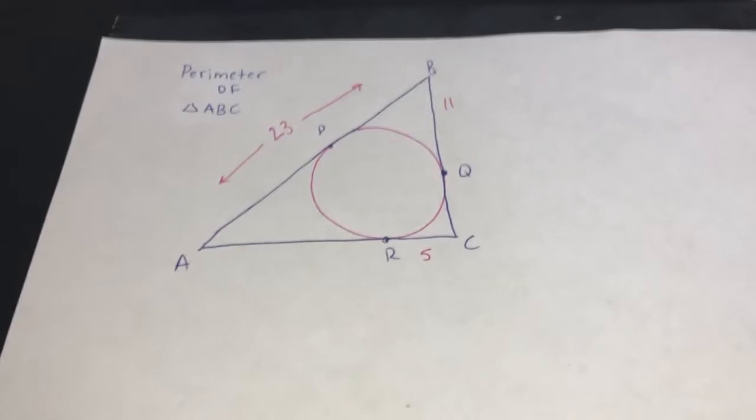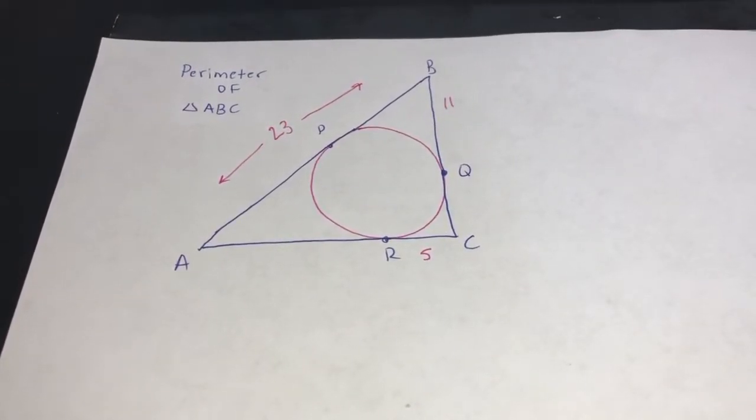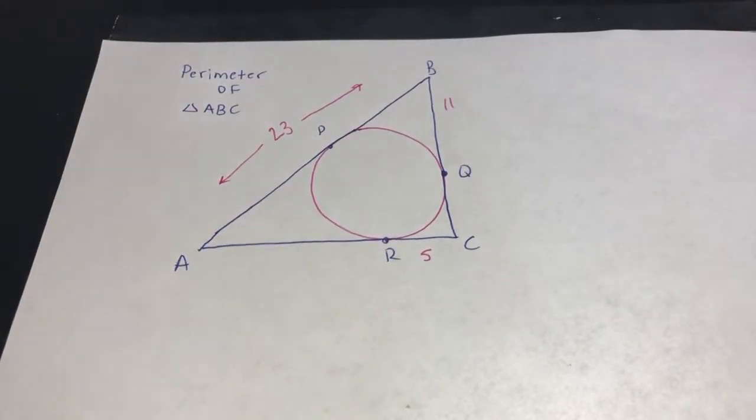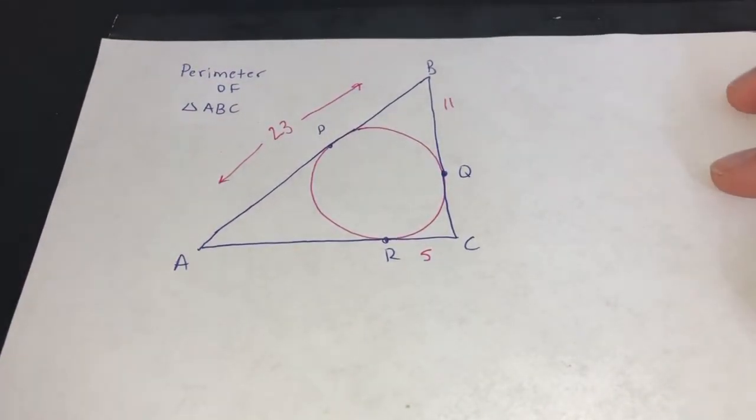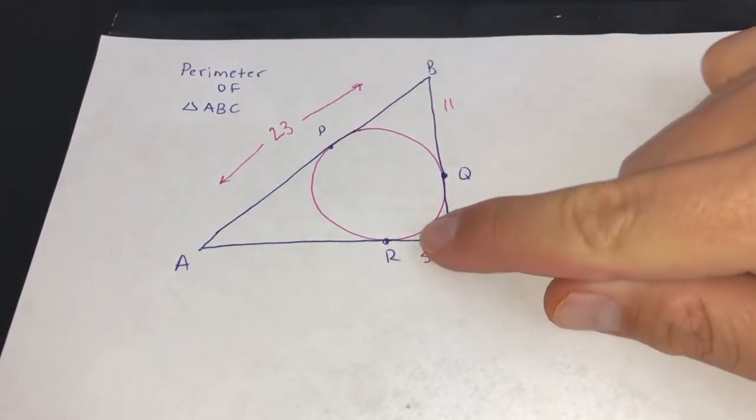Alright, welcome back. I've got another question in geometry and it's asking for the perimeter of this big triangle ABC. We know that this little part is 11, we don't know this part, we know this part is 5, we don't know this part.